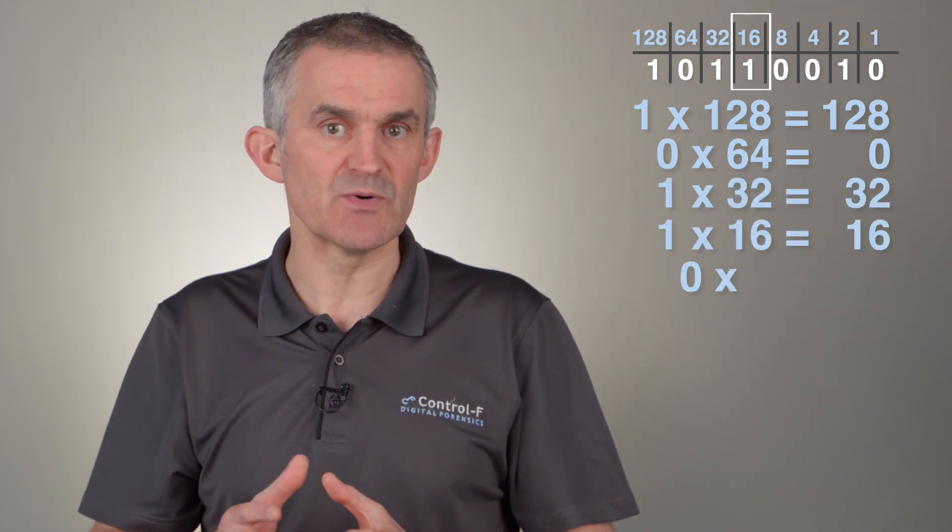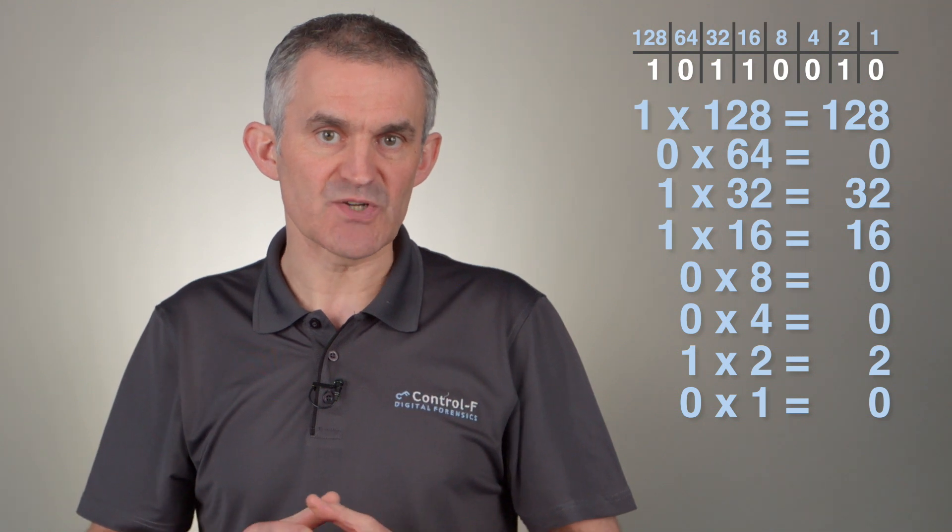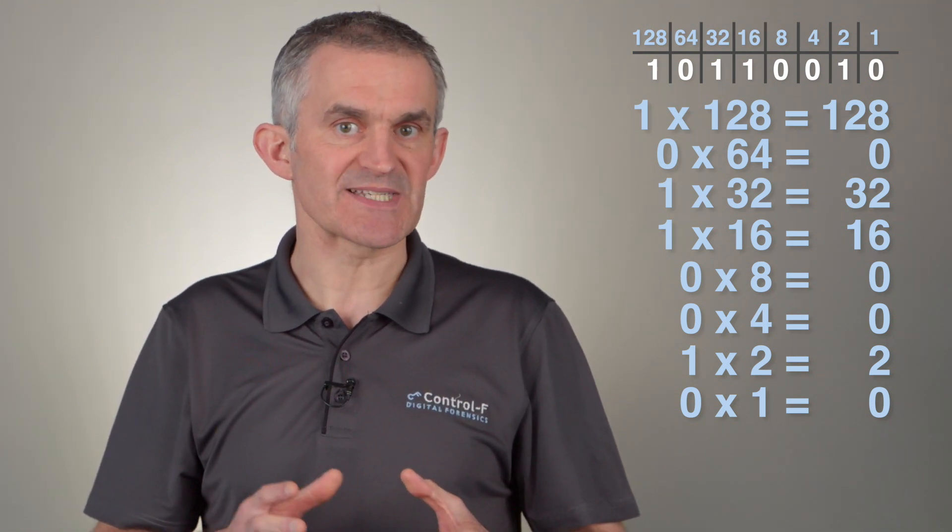Considering the next column, we have 0 multiplied by 64. Remember, any number multiplied by 0 is 0. We continue this process of multiplying each digit by its place value for the remaining columns. The second part of our process is to add all of these results together. In other words, the binary number 10110010 is equivalent to decimal 178. Try this process yourself with the binary numbers shown on screen, and check the comments for the answer.